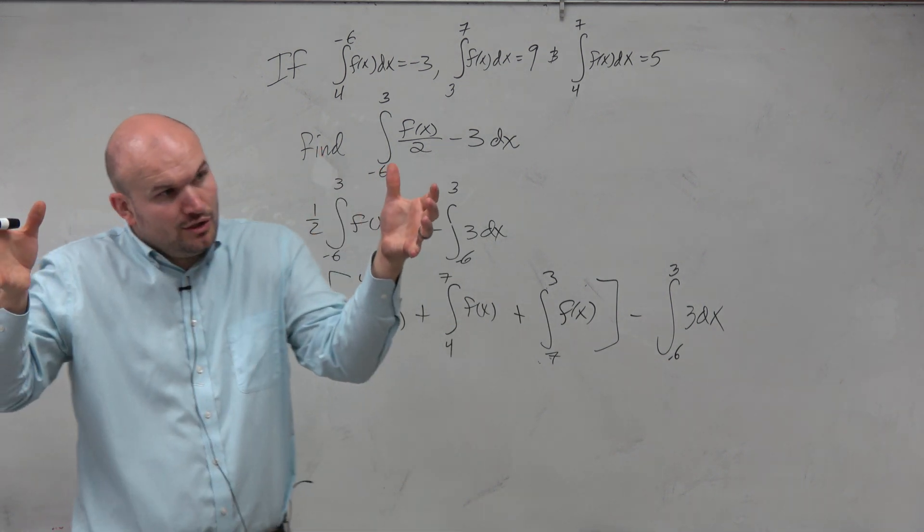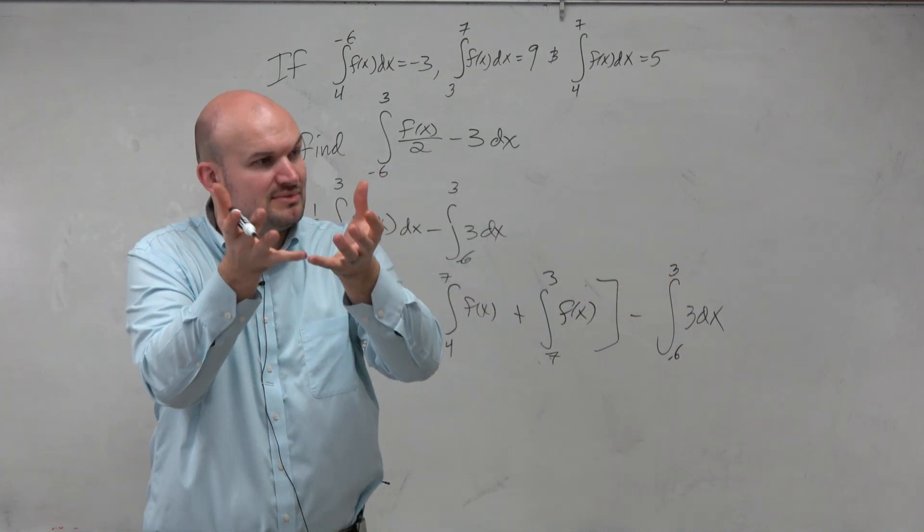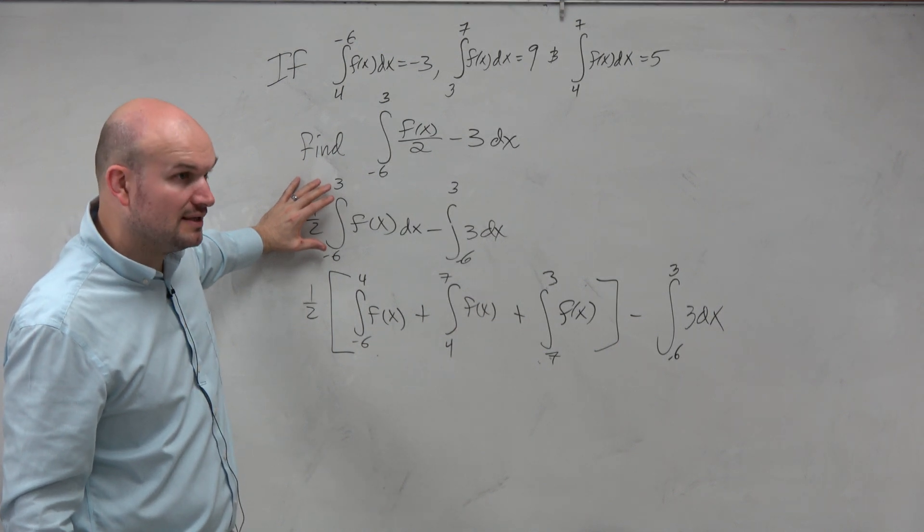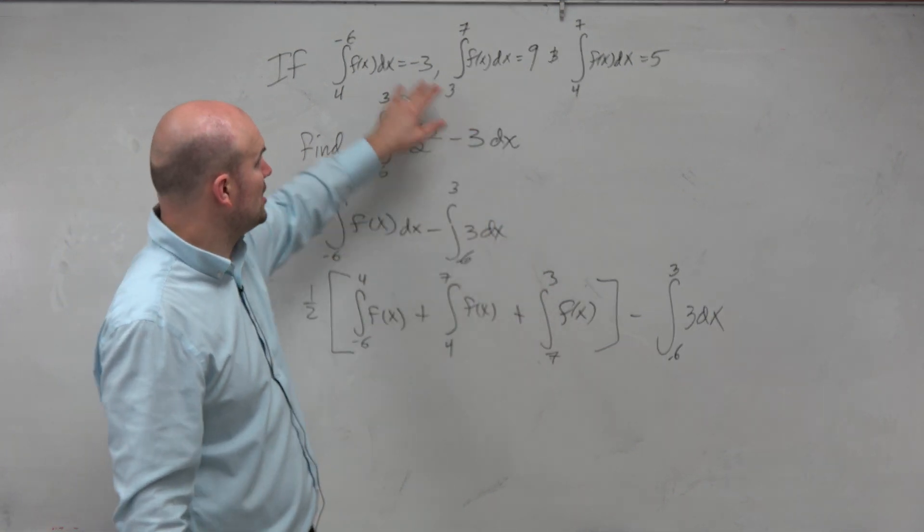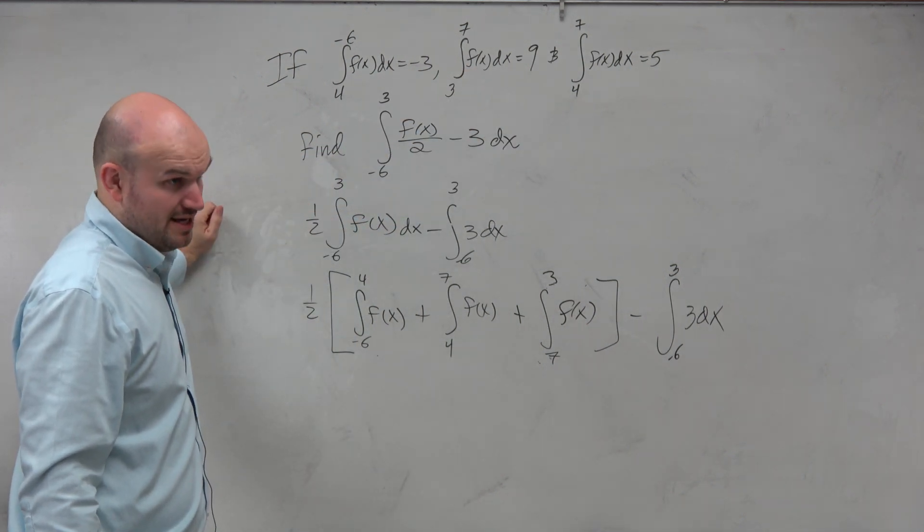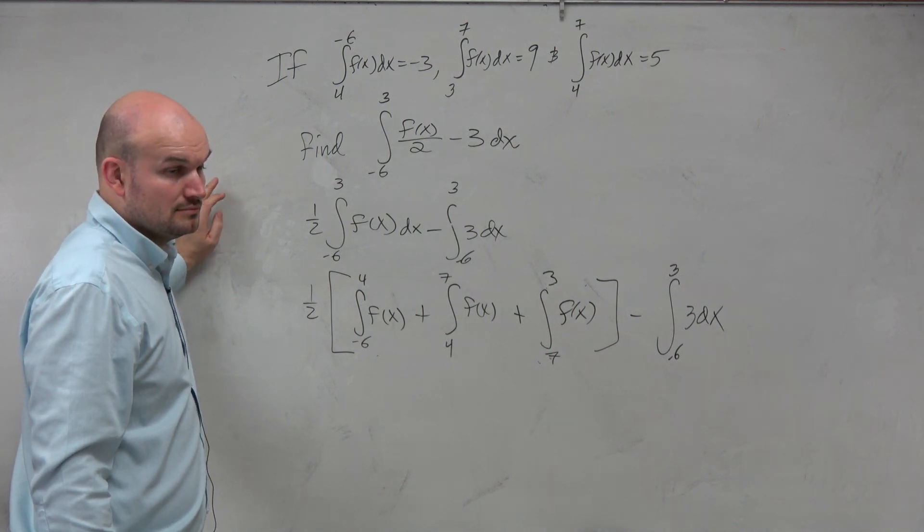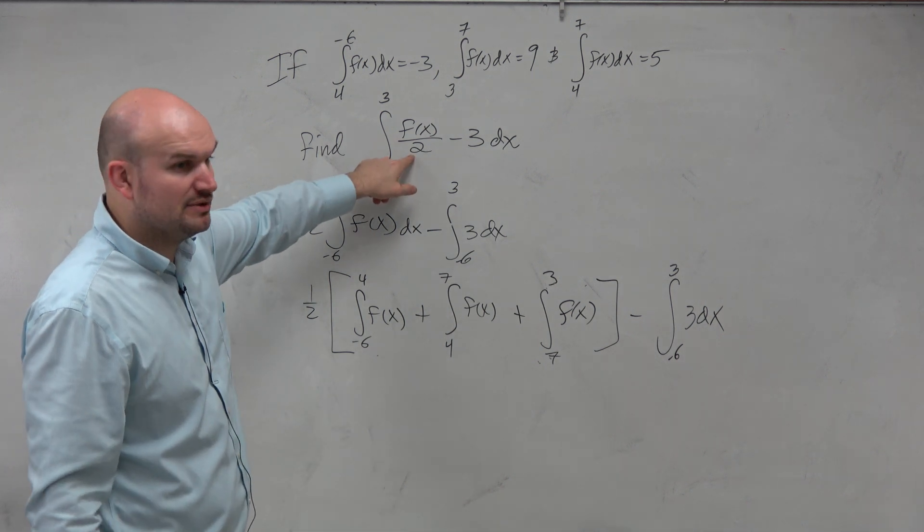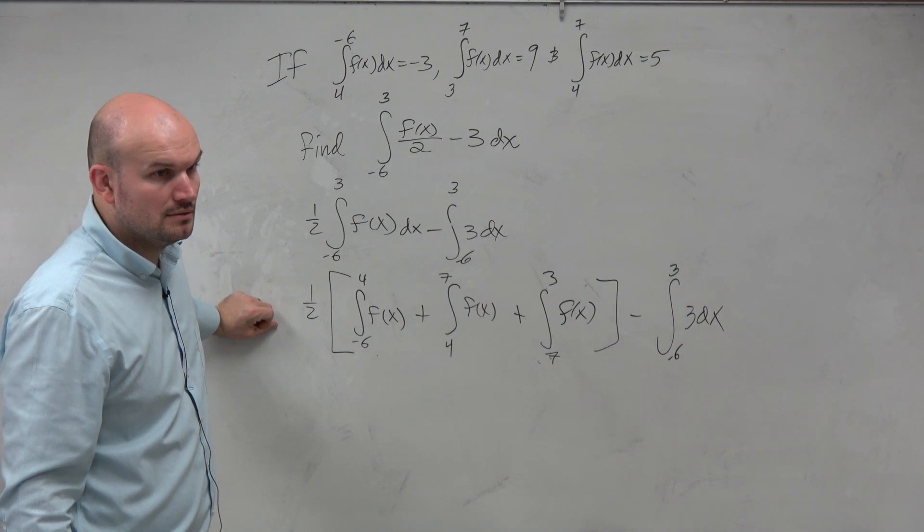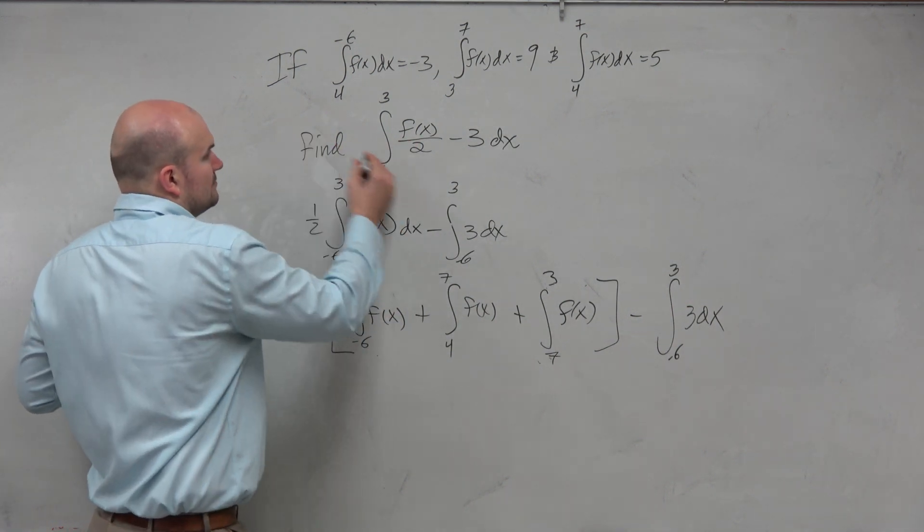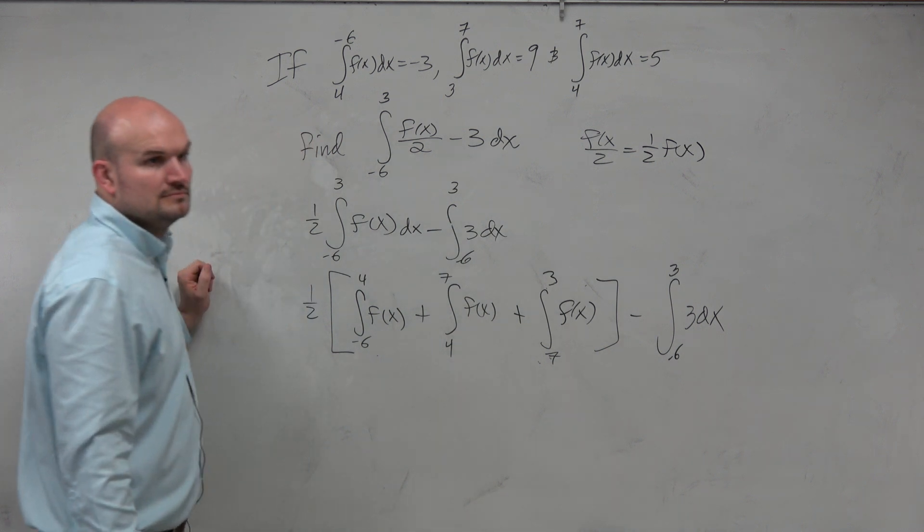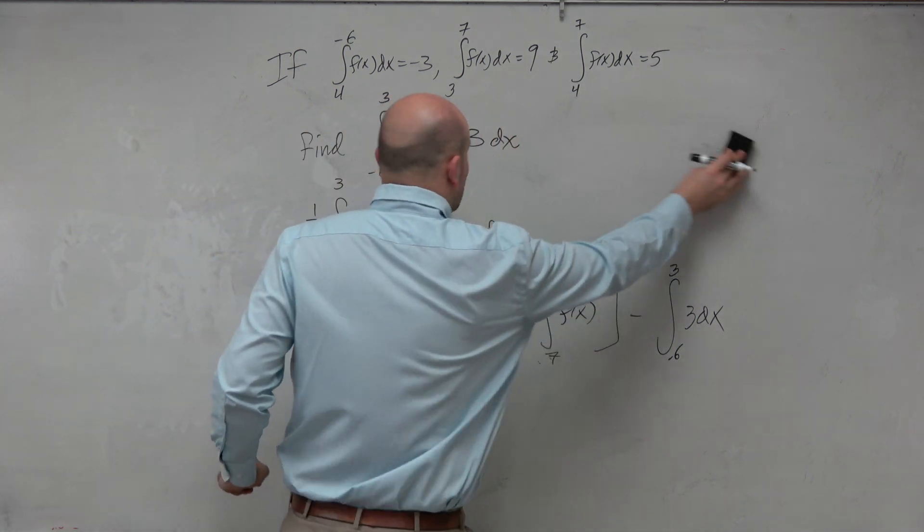We don't have anything from negative 6 to 3. None of these go from negative 6 to 3. But if I patch these together, it takes me to where I want to go. You can take an integral and break it up. You could also take the parts and bring them together. All I did was I took this and expanded it out to its parts based on this information.